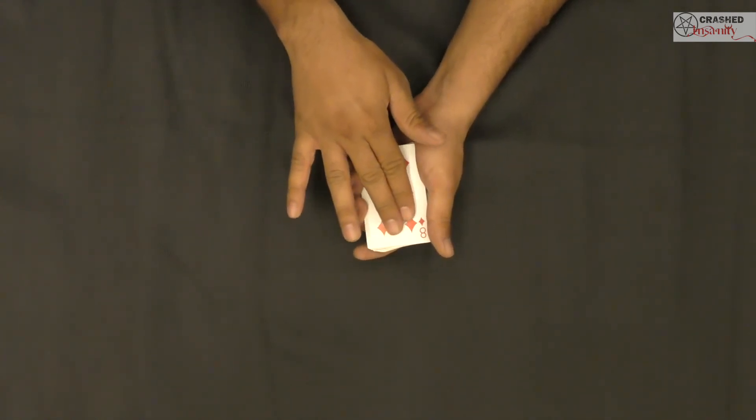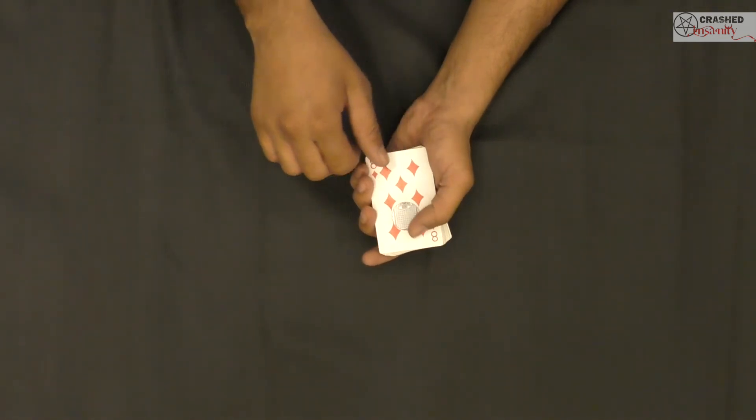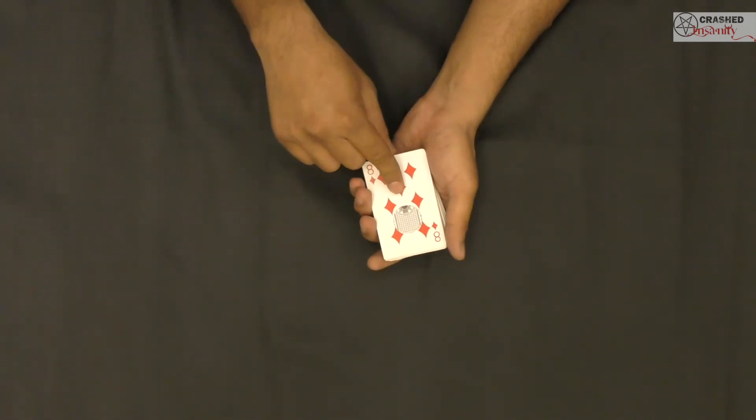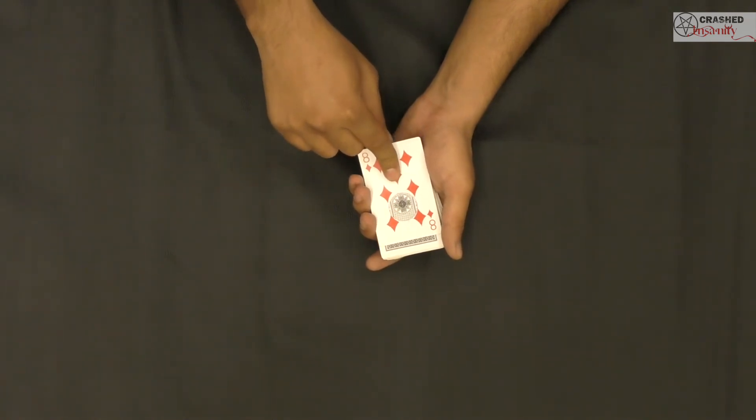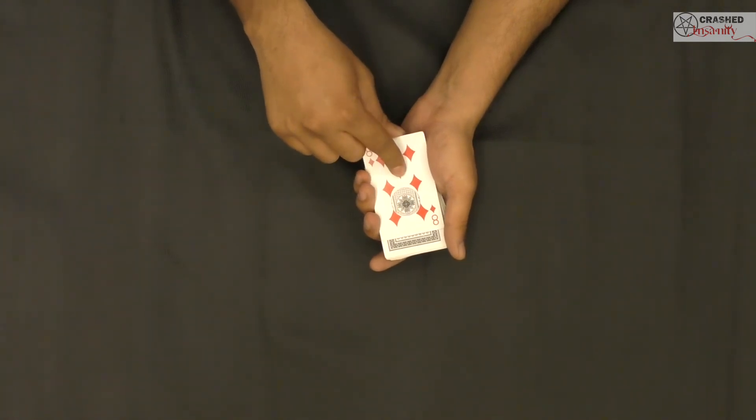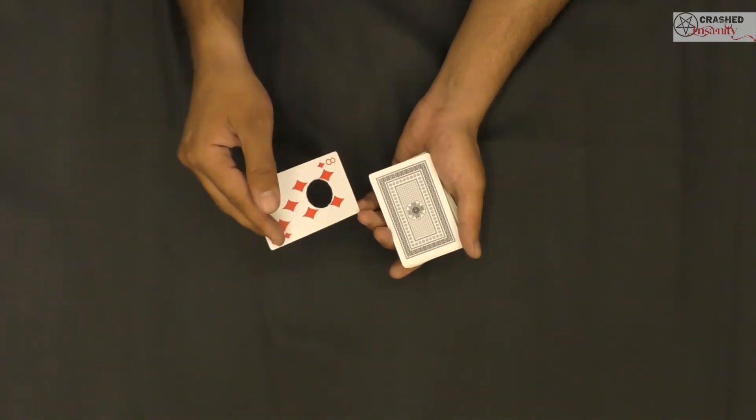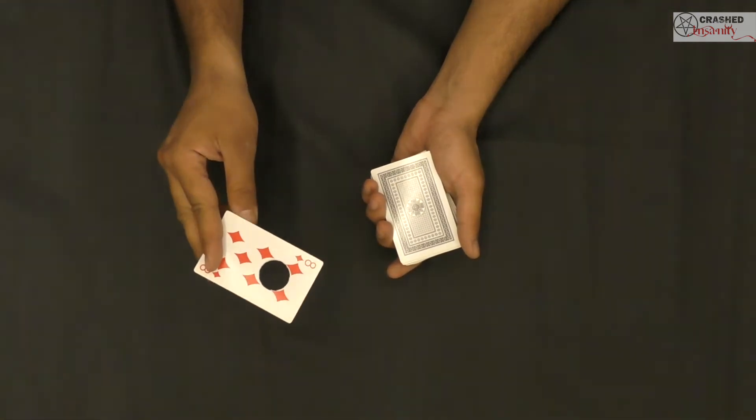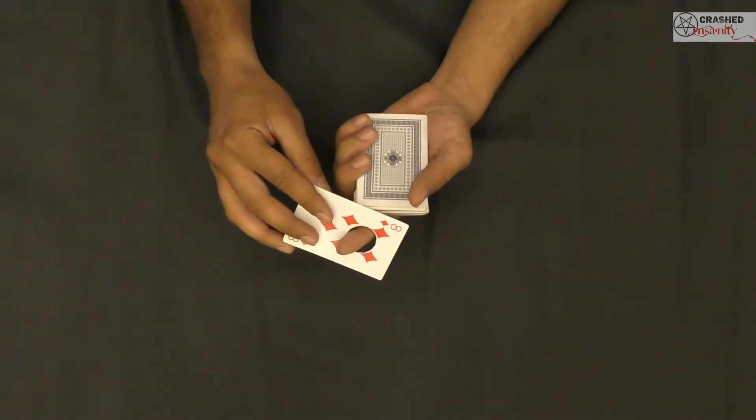Because now if I move the card, the hole becomes real and you can actually see the movement on the rest of the deck. Even if I remove the card completely from the deck, you can see that the hole indeed is real.